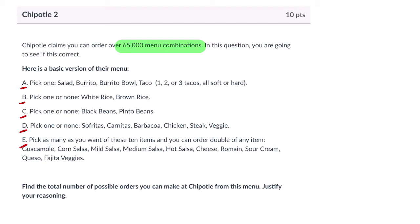Now, in some categories, it might be easier than others. For example, category B. It says pick one or none. So it's white rice, brown rice, or none. That's three possibilities. Not so bad to count that one. For part C, it's pick one or none. Black beans, pinto beans, or none. That's three possibilities.